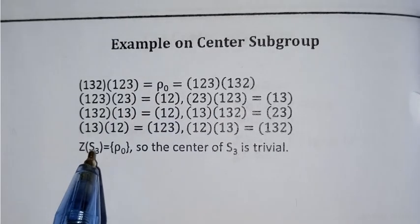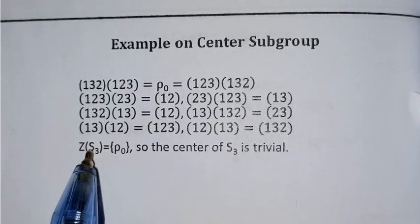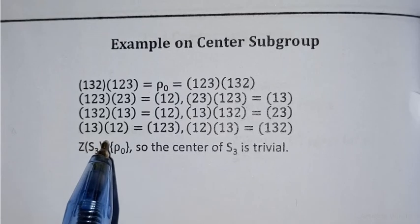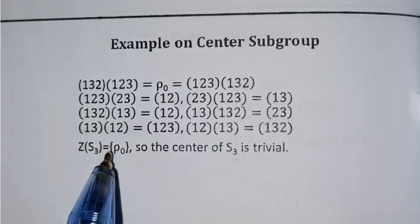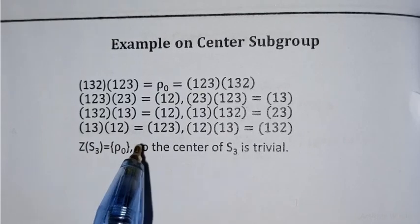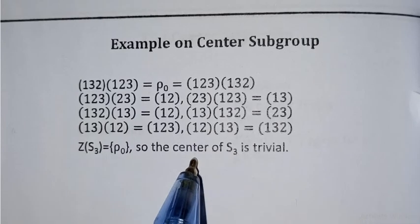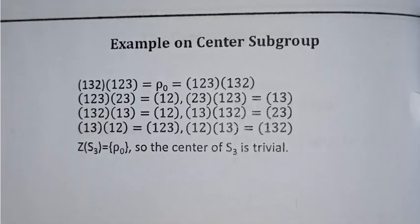Since no permutation other than the identity satisfies the commutative law with all elements of S3, the center Z(S3) contains only the identity permutation ρ₀. Therefore the center of S3 is trivial, equal to {e}.